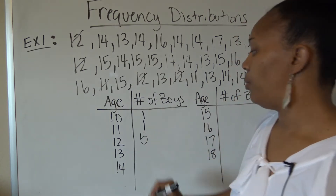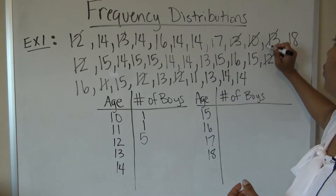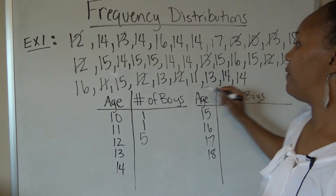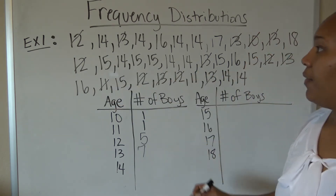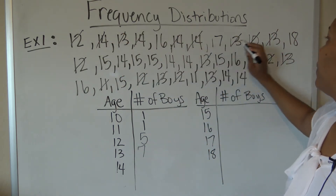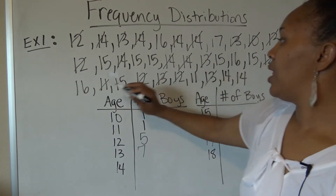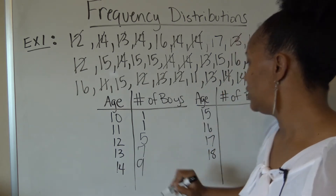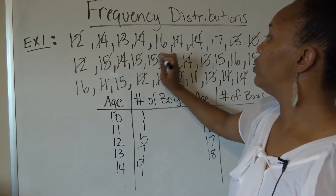Now looking for 13s: 1, 2, 3, 4, 5, 6, 7 — there are 7 thirteens. Then for 14: 1, 2, 3, 4, 5, 6, 7, 8, 9 — there are 9 fourteens.